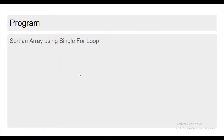How to sort an array using a single for loop? Most people know how to sort using multiple loops, but only a few know how to do it with a single for loop. I've made a video on this and put it in my playlist — you can refer to it there for a clear explanation.